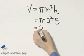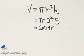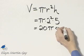4 times 5 is 20. So I have an exact volume of 20 pi, and this is, by the way, in cubic inches.